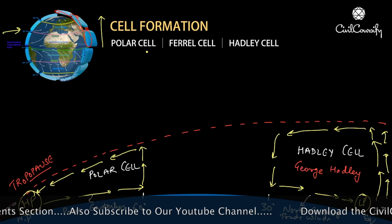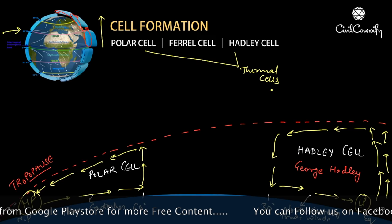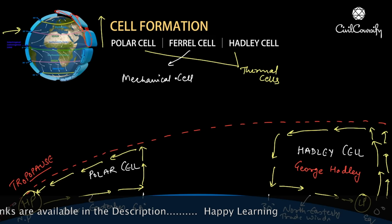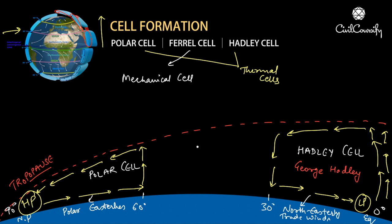Now we've seen both the Hadley cell and the polar cell. You must know that both the polar cell and the Hadley cell are thermal cells, because they are formed due to the insolation of the sun leading to pressure differences. The Ferrel cell, on the other hand, is a mechanical cell — meaning it is formed because of the void created by these two thermal cells. When the Hadley cell and polar cell form, a gap is created between them, and a mechanical cell forms to fill that gap. This is known as the Ferrel cell.